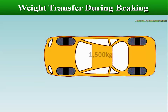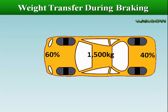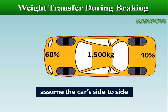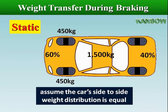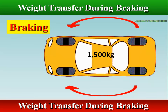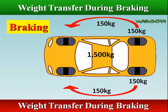Consider a car that weighs 1,500 kilograms, with a typical front-wheel-drive weight distribution of 60% front and 40% rear, and equal side-to-side distribution. When standing still, the front tires have a load of 450 kilograms and the rear tires have 300 kilograms each. The inertia of the vehicle during braking transfers force from the rear to the front, effectively decreasing the weight on the rear wheels and increasing the weight applied to the front wheels.